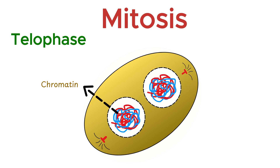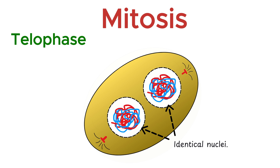The nucleolus also reappears in each nucleus. At this point, the cell has two identical nuclei. Mitosis is now complete. The cell is almost ready to divide into two separate cells, and that happens in the next process called cytokinesis.